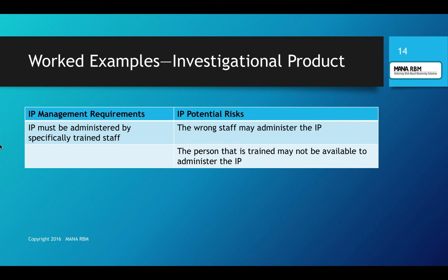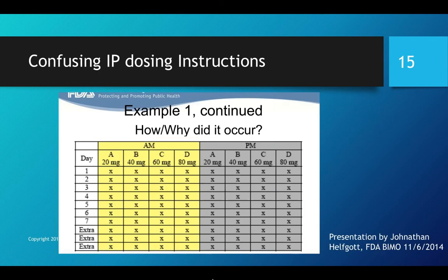Here's another example: an IP that must be administered by specifically trained staff — this came from a device trial. One risk is that the wrong staff may administer the IP. How would you know that? A second risk is that the trained person may not be available. What happens then? By putting these risks down and thinking through them, you can start to put plans in place.